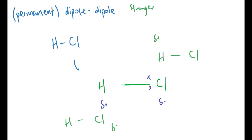This electrostatic attraction can still be overcome — melting and boiling points depend on how much energy is required to overcome the attractions. In terms of exam diagrams, if you're expected to draw this interaction, you'd show the molecules with their partial charges and indicate the attraction between the delta positive and delta negative ends. That's the simple description and explanation of the dipole-dipole situation.